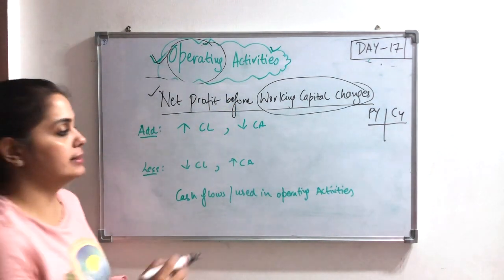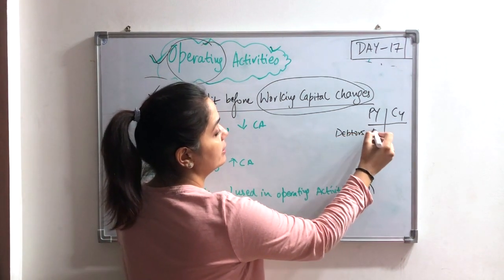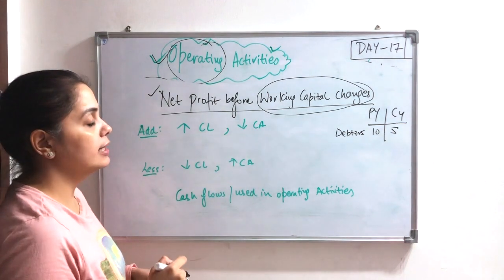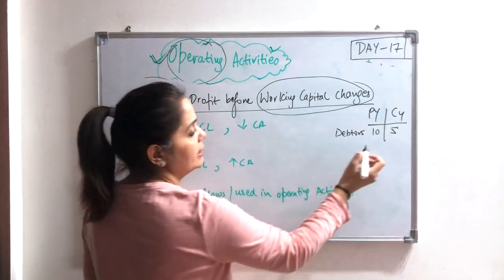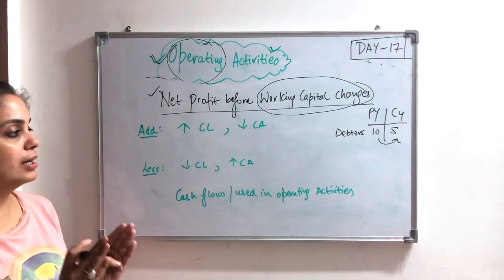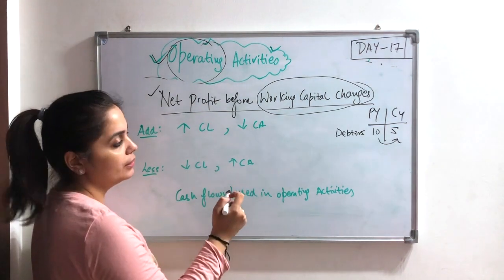So if my current asset, let's say my debtor. Debtors were my first 10 and now 5, take in lakhs. 10 and 5, that means my debtors are reduced. So, I will use this amount of 5 lakh, that means I will add.